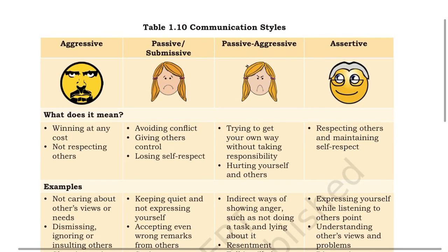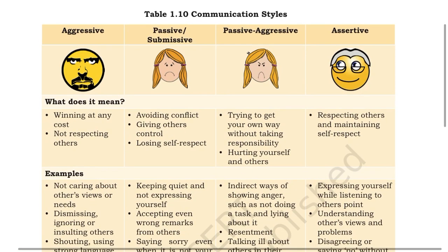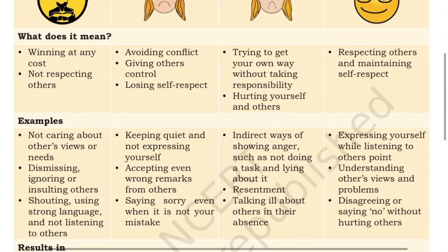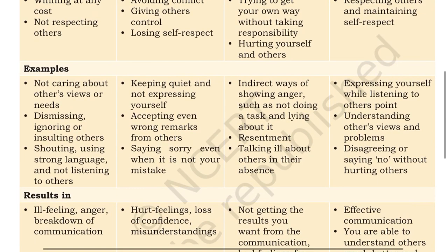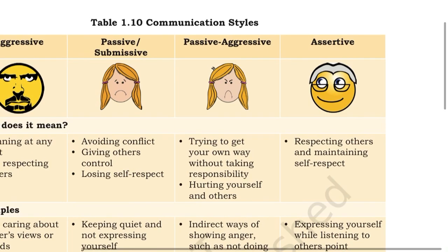Next communication style is passive और submissive. इसमें क्या होता है — आप जो conflicts हैं उनको avoid करते हो, आप अपना control भी दूसरों को दे देते हो, अपनी खुद की self respect है वो आप खो देते हो। Examples क्या हो सकते हैं — हमेशा अपने आपको express ना कर पाना, आप दूसरों की गलतियों को और दूसरों की जो remarks हैं उनको भी accept कर लेना, अगर आपको पता है आपकी गलती नहीं है उसके बावजूद sorry बोलना। इसका result क्या होगा — आपको hard feelings हो जाएंगी, आप अपना confidence lose कर जाओगे, misunderstandings create हो जाएंगी।